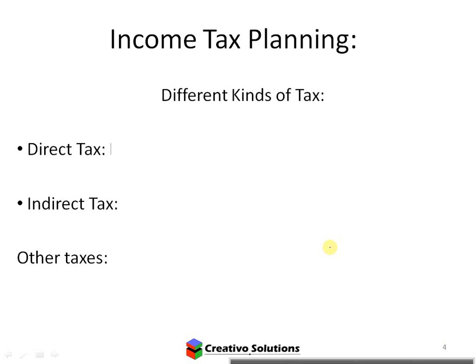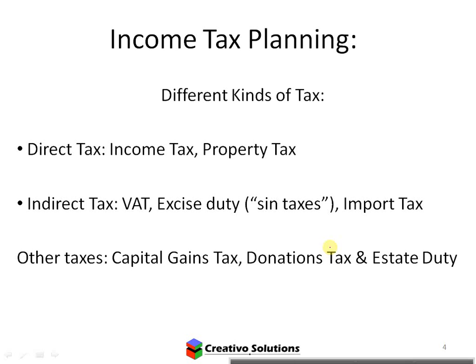Examples of direct tax include income tax and property tax — direct because they're specific to that individual or property. Indirect is where government collects tax from you as the consumer, but collects it from the company — for example, VAT. Excise duty, sin taxes, and import tax are also indirect. Other taxes would include capital gains, donations, and estate duty.